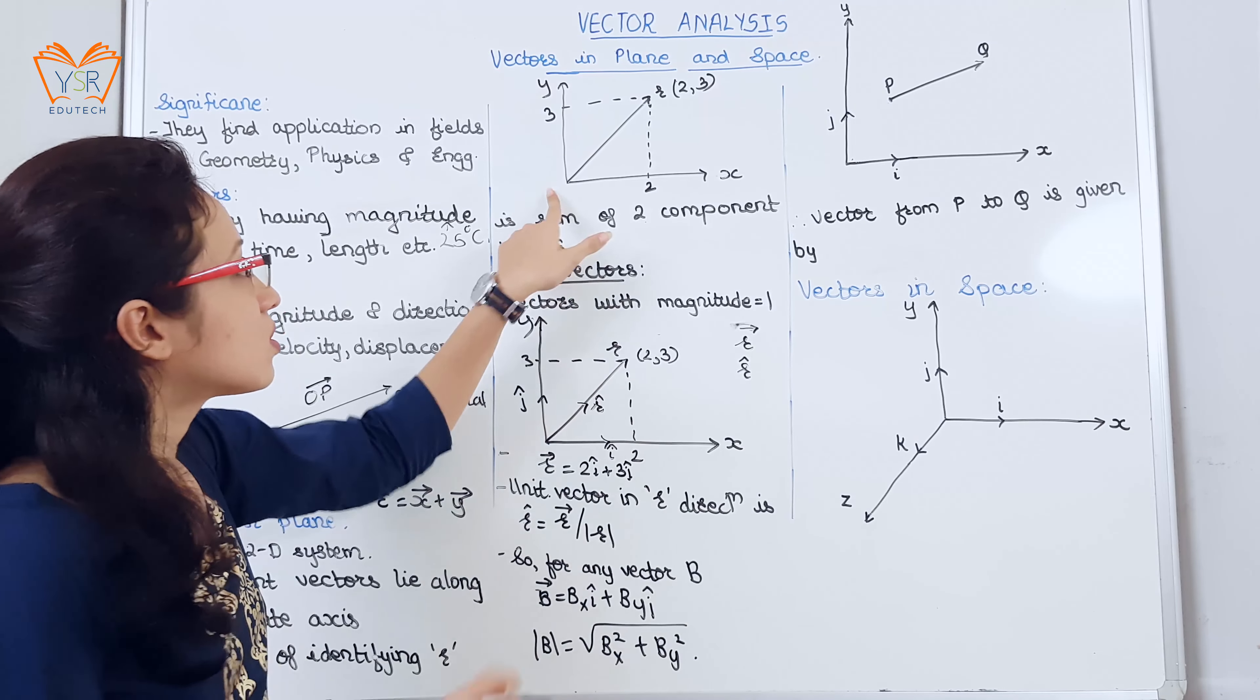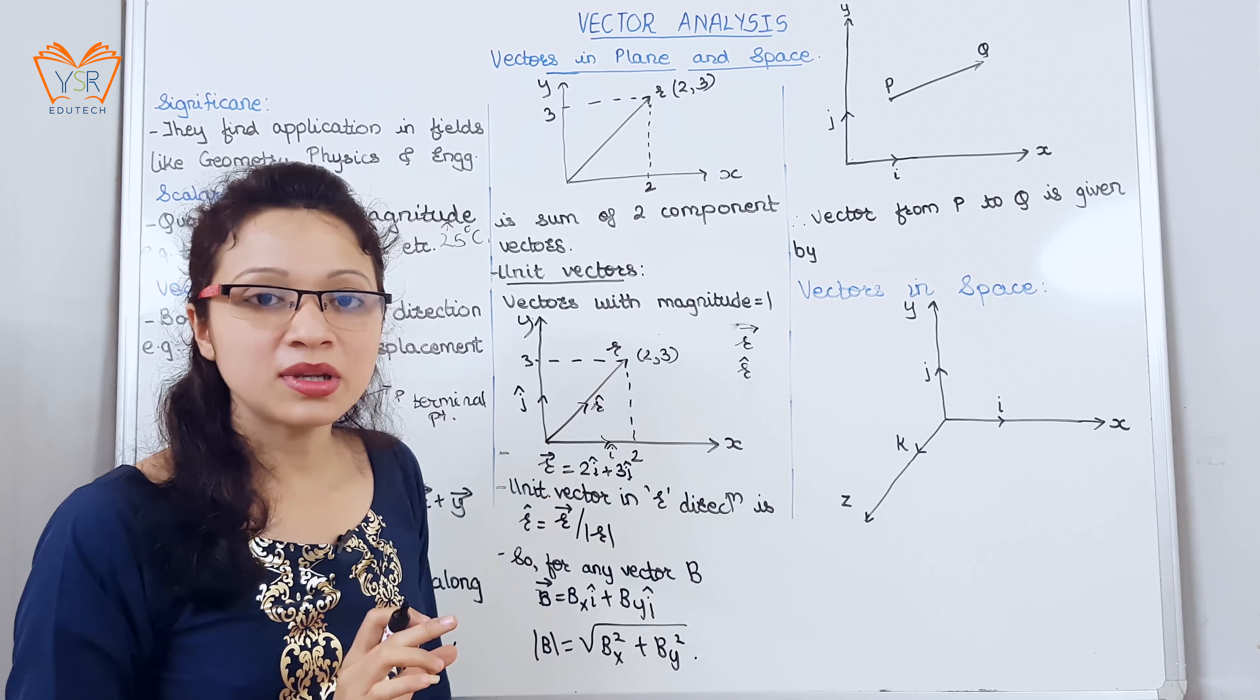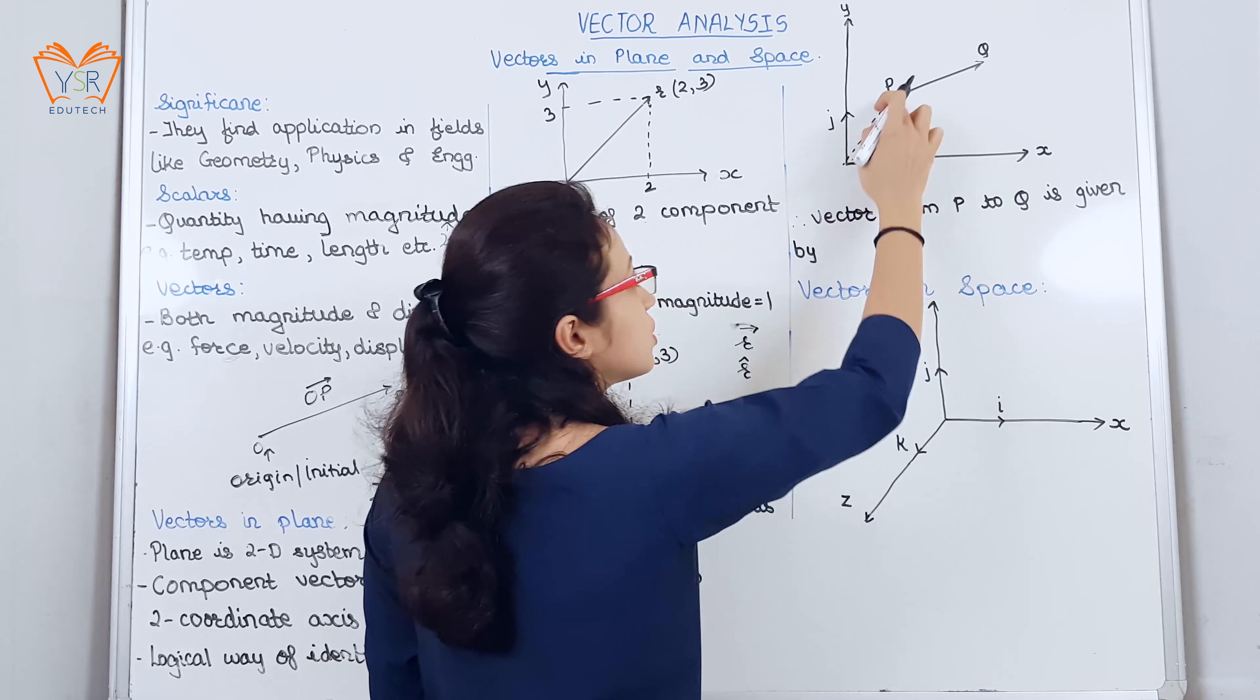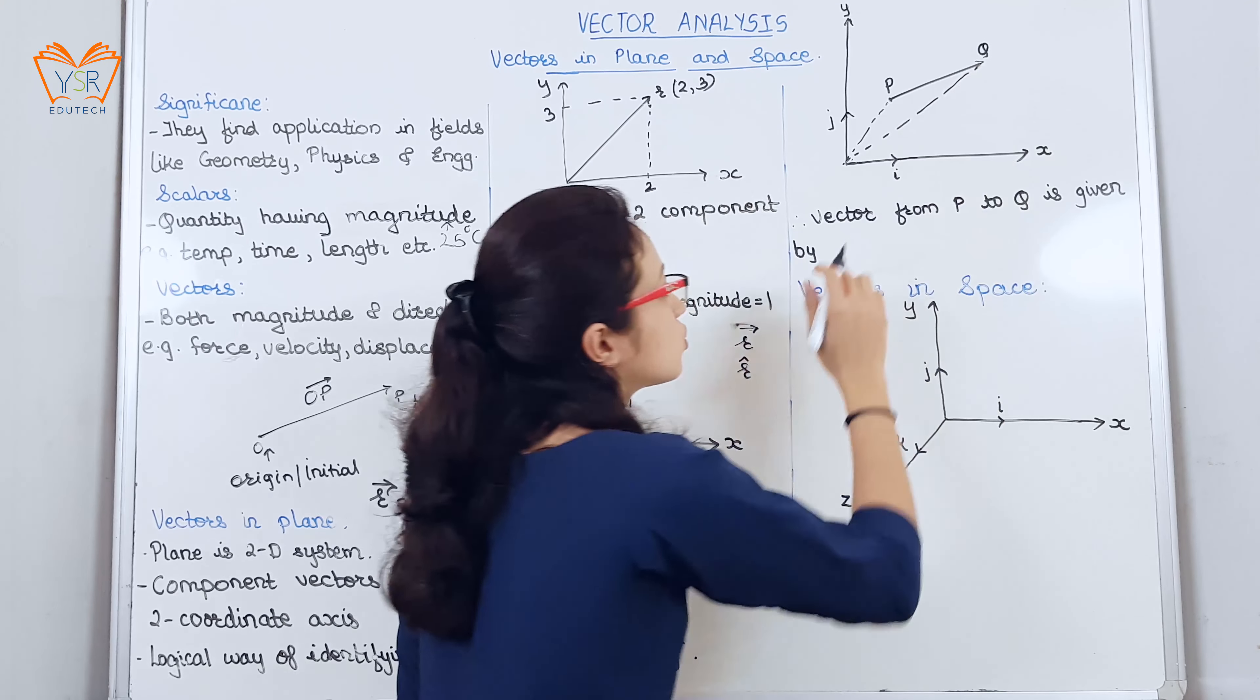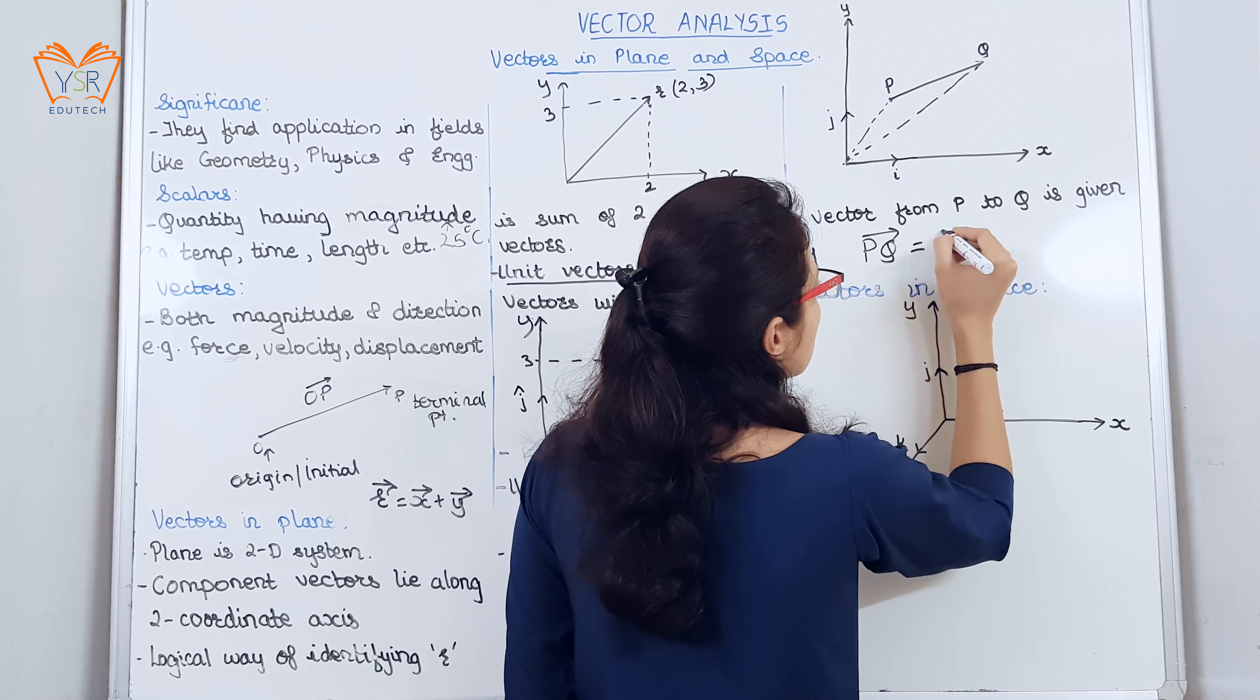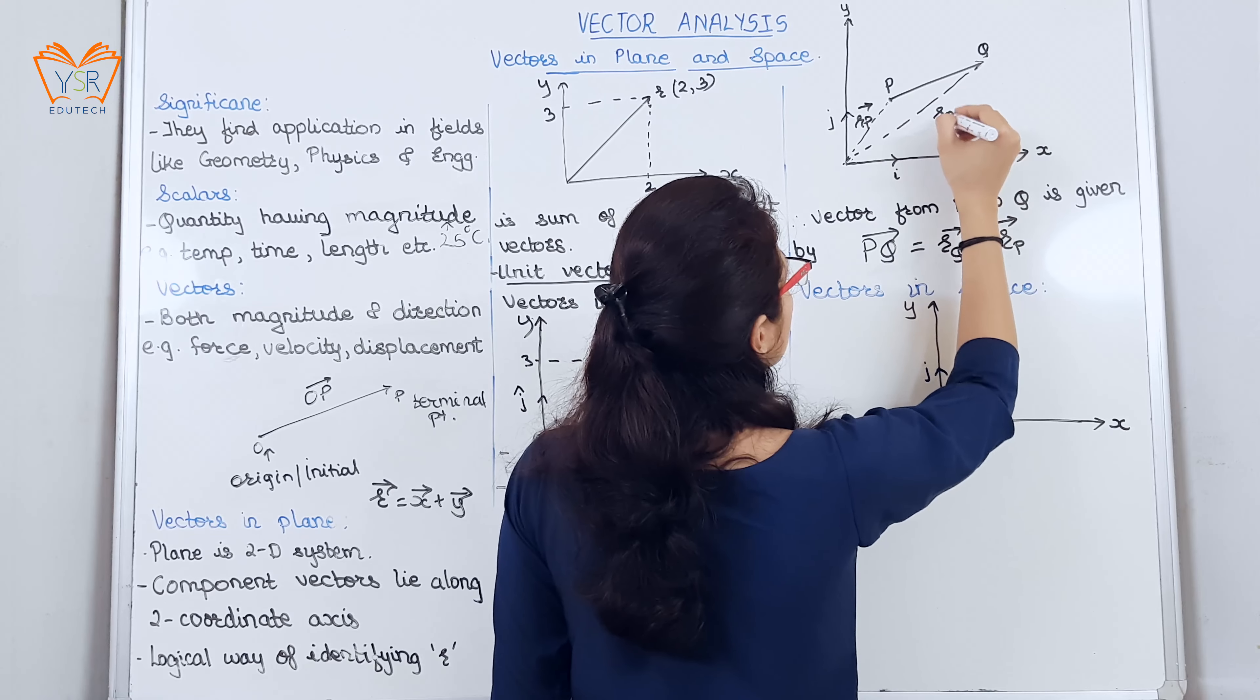In this example we saw that r vector is starting from the origin. If in case the vector lies somewhere in the plane, simply draw a vector from here that connects origin to point p and another vector from origin to point q. So vector from p to q is given as rq vector minus rp vector. This is the rp vector, this is the rq vector.